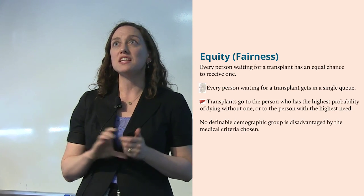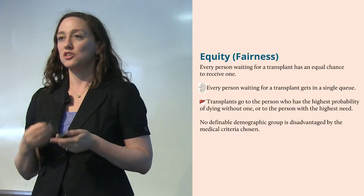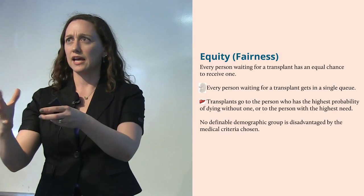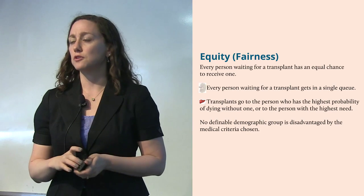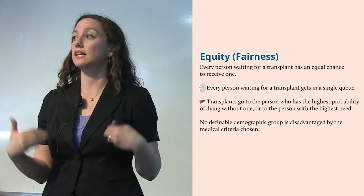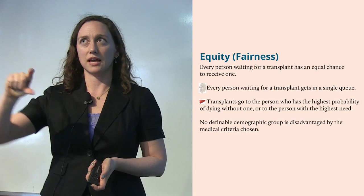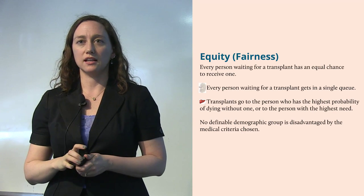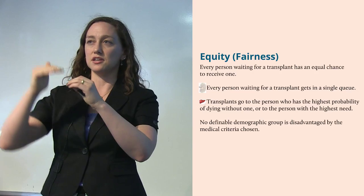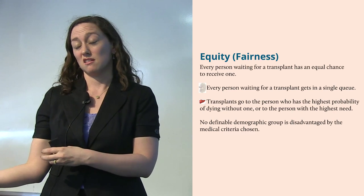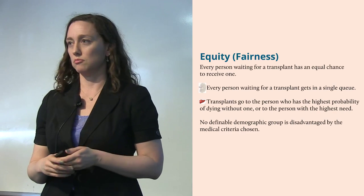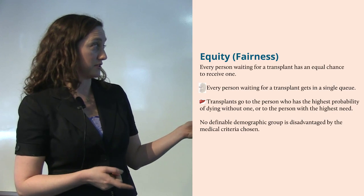Or equity might mean no definable demographic group is being disadvantaged — women make up 40% of the transplant list, so they should get 40% of organs; people over 70 should get their proportional share. This is actually what sunk a proposal to allocate kidneys according to maximum life-years benefit — analysis showed older people would be very disadvantaged, since they have fewer years to live and can't accrue as many years of additional benefit. So that proposal was thrown away completely.